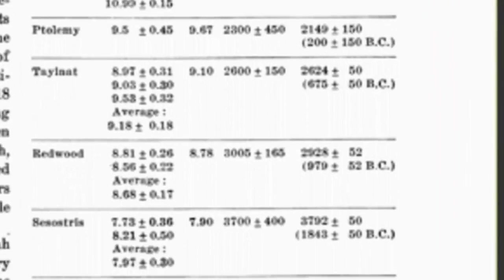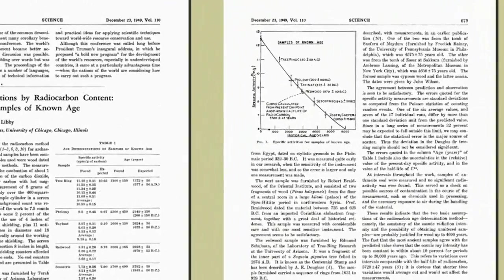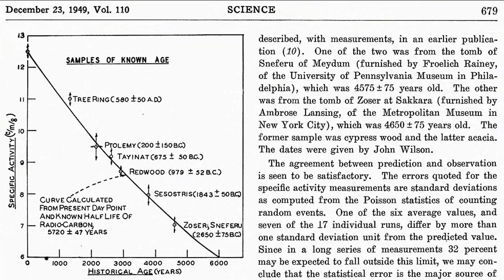By the end of 1949, they had published in Science again, with details of the accurate radiocarbon dating of six samples of known age. In that article, they included the curve of knowns. For each of the calculated dates, they included error bars, and on the same graph, they plotted Ernest Rutherford's law of radioactive decay values for carbon-14. It's important to note that the Rutherford curve is plotted independent of the calculated dates, and yet it passes through five of the six calculated points, and through the error bar of the sixth.